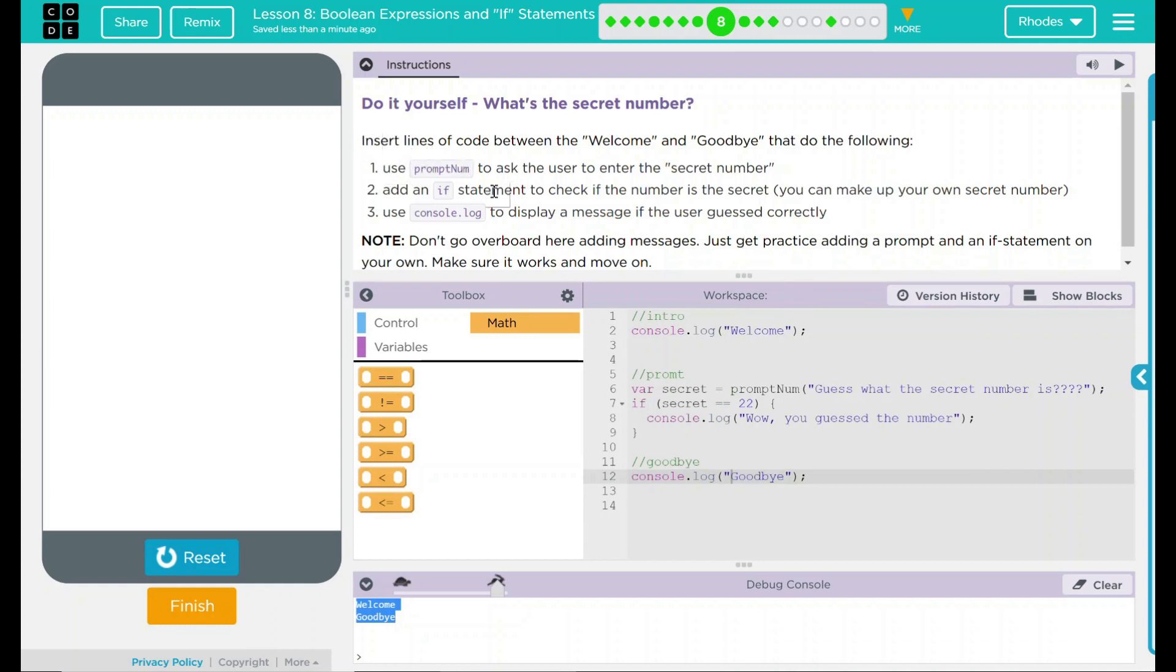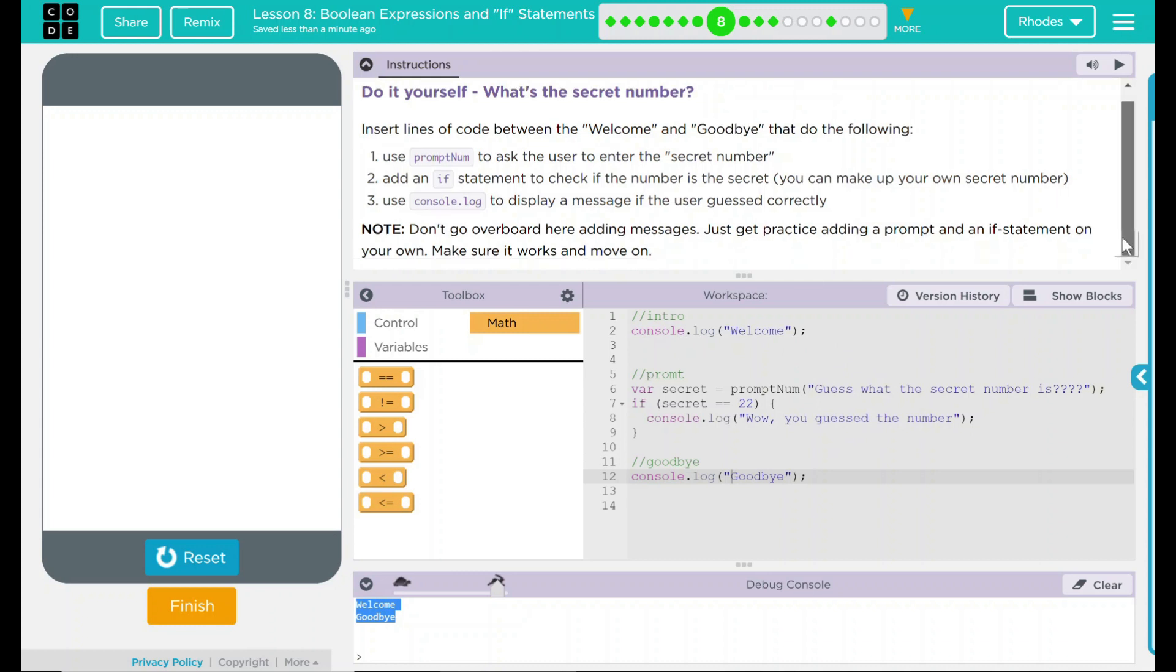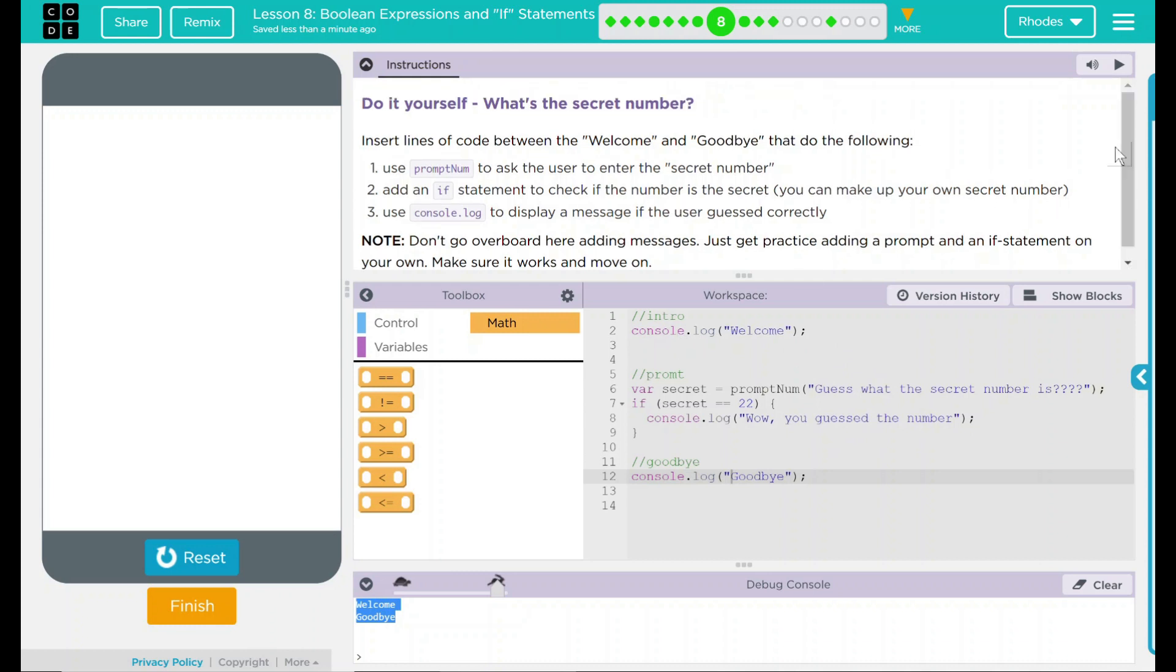Looking back up here, we added a prompt to an if statement and a console.log message that displayed when the user got the number right. That was a lot of fun. I'm going to assume here we're going to build on this and have even more fun. Let's see if code.org wants anything else from us.